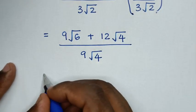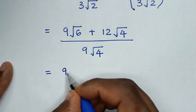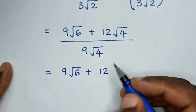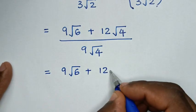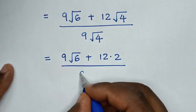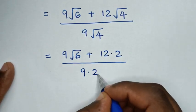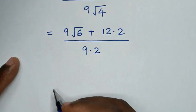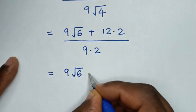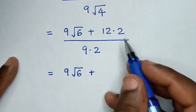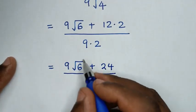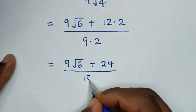Then in the next step it will be equal to 9 square root of 6 plus 12 times square root of 4, and square root of 4 is 2, so 12 times 2. Then over 9 times square root of 4, which is 9 times 2, it is 18.